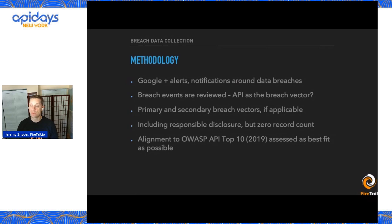So if a researcher says they were able to download 100 million records to prove the vulnerability was there, we'll include that count. But if they say they just found and disclosed the flaw with no further discussion, then we put that as a zero record count.